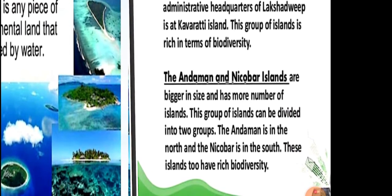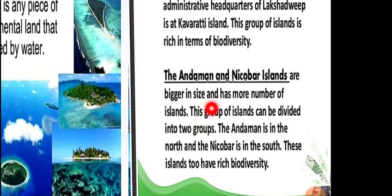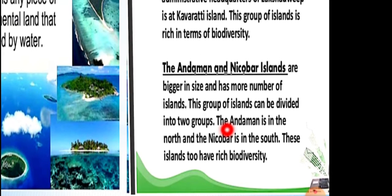Next, Andaman and Nicobar islands are bigger in size and have a greater number of islands. As we have seen, Lakshadweep has a total of 36 small island groups. Now, Andaman and Nicobar are two names in one island group. Andaman is in the north and Nicobar is in the south.